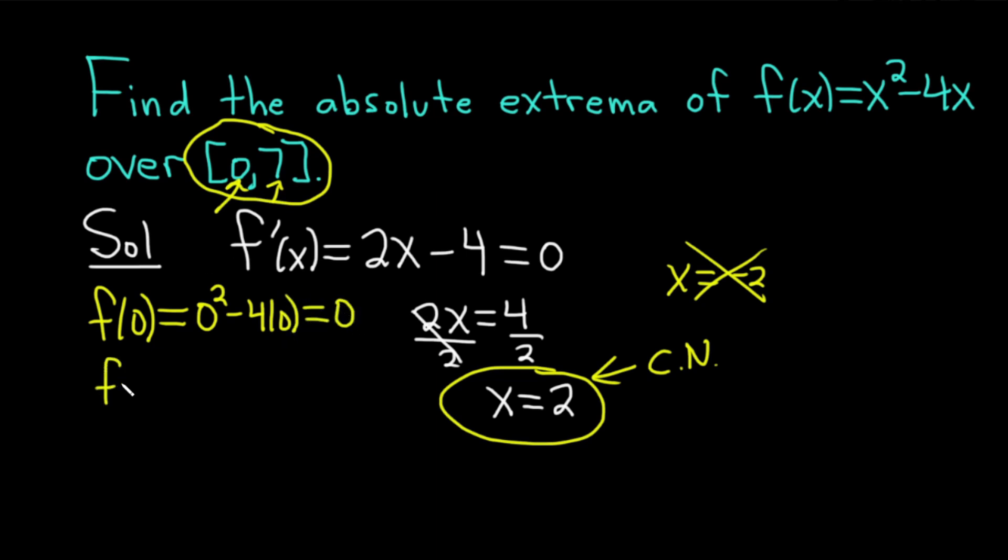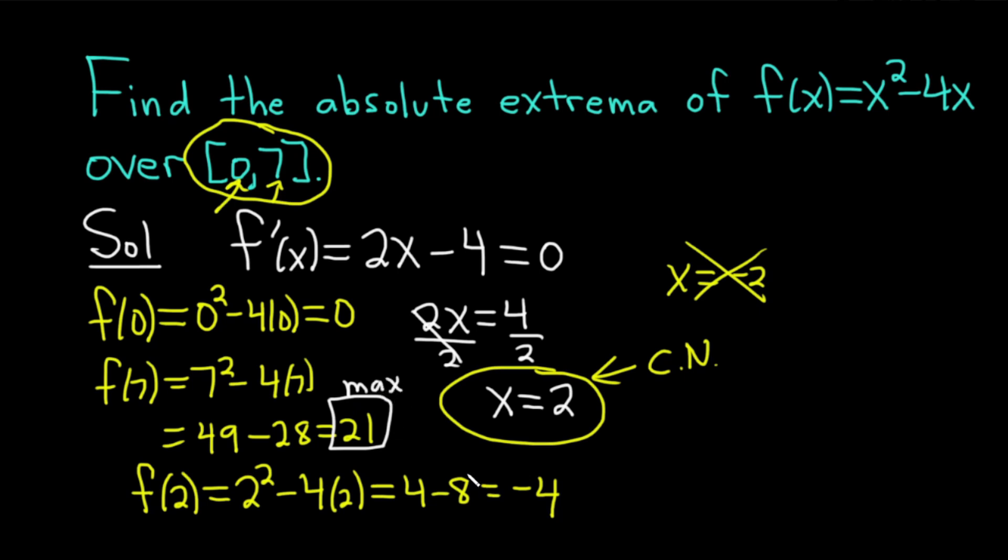We can plug in the 7. So f(7) = 7^2 - 4(7). So that's going to be 49 - 28, which is going to be 21. That's a big number. And then you check your critical number. You plug it into the original. So f(2) is going to be 2^2 - 4(2), which is going to be 4 - 8, which is -4. And we're pretty much done at this point. Basically now all you do is you look at the biggest number. So that's going to be 21. That's your max. And the smallest number is -4. That's your min.